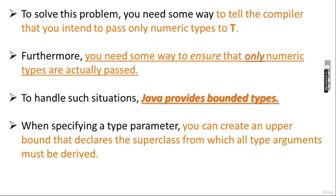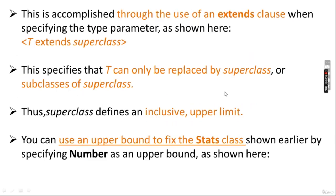You need some way to tell the compiler you intend to pass only numeric types to T, and to ensure only numeric types are actually passed. To handle this, Java provides bounded types. When specifying the type parameter, you can create an upper bound that declares the superclass from which type arguments will be derived — in this case Number. This is accomplished through the use of the extends clause: T extends Number.